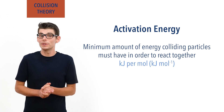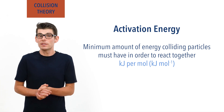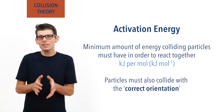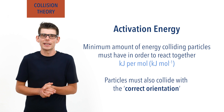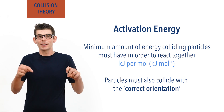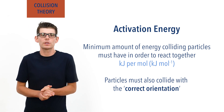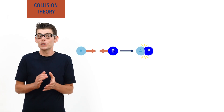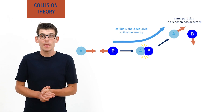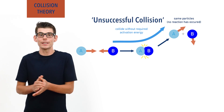Sometimes particles also need to hit each other in a very specific way in order to react. This is described as colliding with the correct orientation. This is a slightly more advanced idea, however, and is covered in a separate video and on chemistrystudent.com. Check the links in the description below. Most of the time particles collide, nothing happens, as they simply don't collide with enough energy to reach the activation energy required. These collisions are referred to as unsuccessful or unaffected collisions.